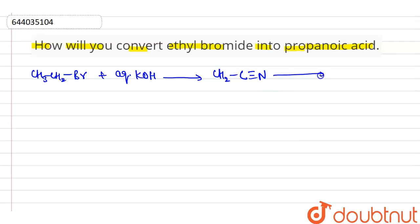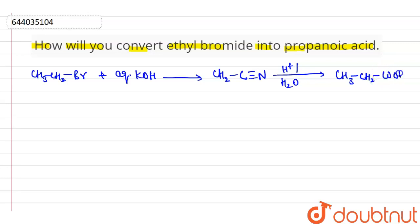Ethyl cyanide is then reacted with acidic medium in aqueous solution, and it will convert into propionic acid, that is CH3CH2COOH. That is our propionic acid, formed from ethyl cyanide.